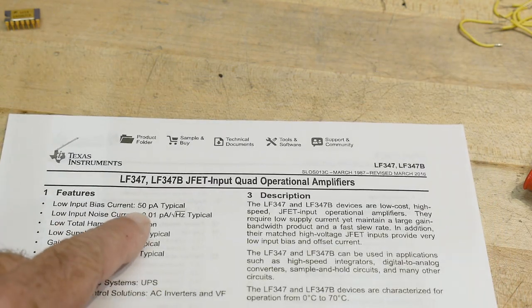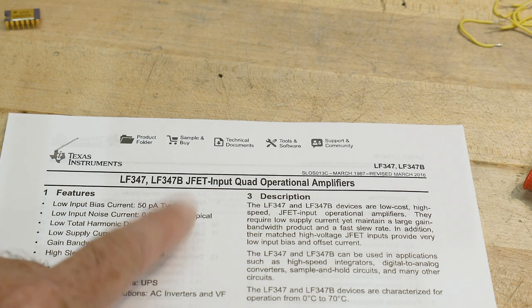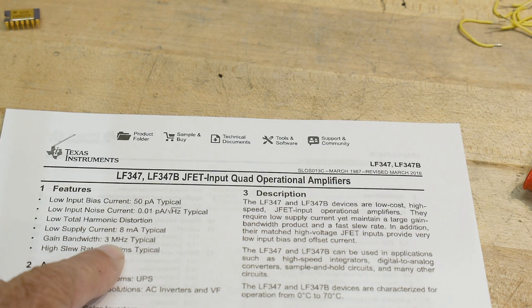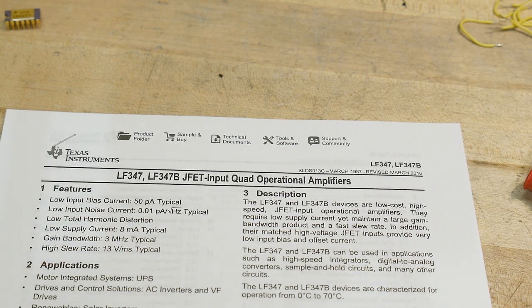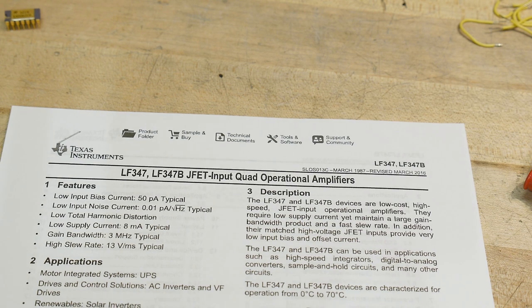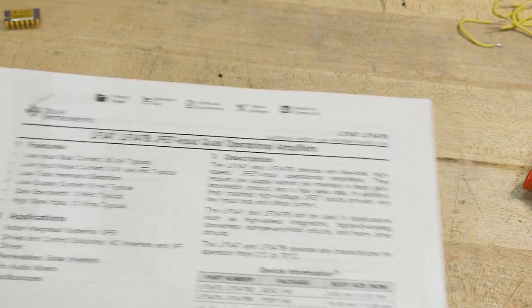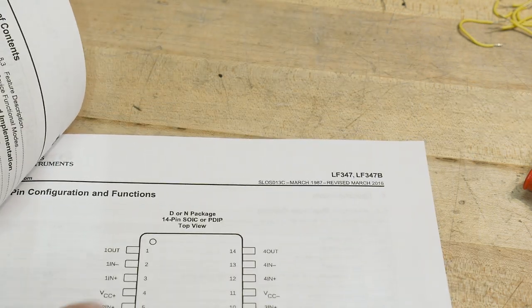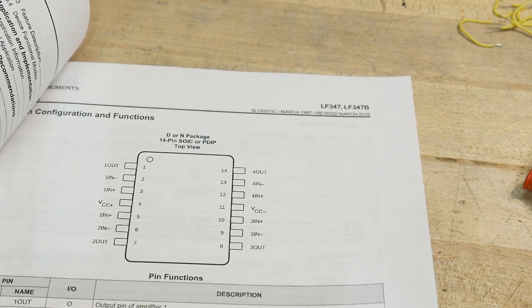So it has great specs: 50 picoamps, pretty good low noise, 0.01 picoamps per root hertz maybe lower noise, three megahertz gain bandwidth, open loop bandwidth, low supply current eight milliamps. Yeah, so it is a quad op amp, so it's the same pinout as every other quad op amp, so just plug them in and away they go.